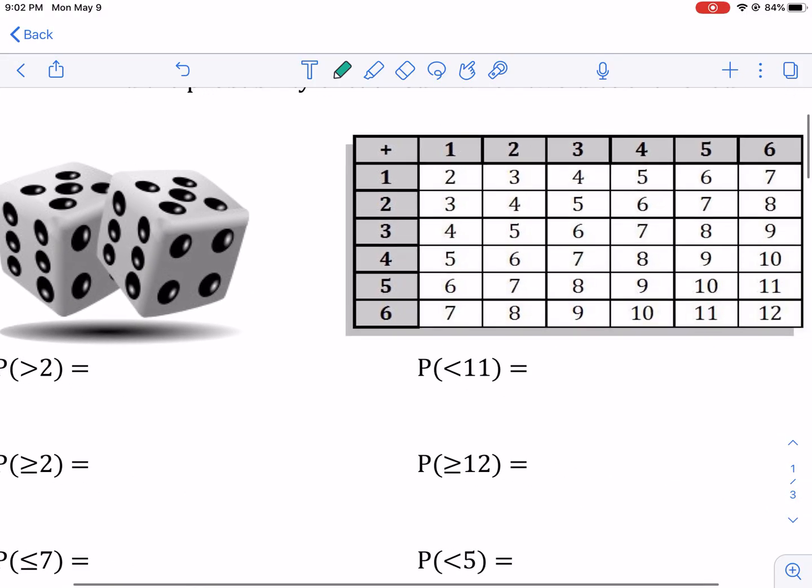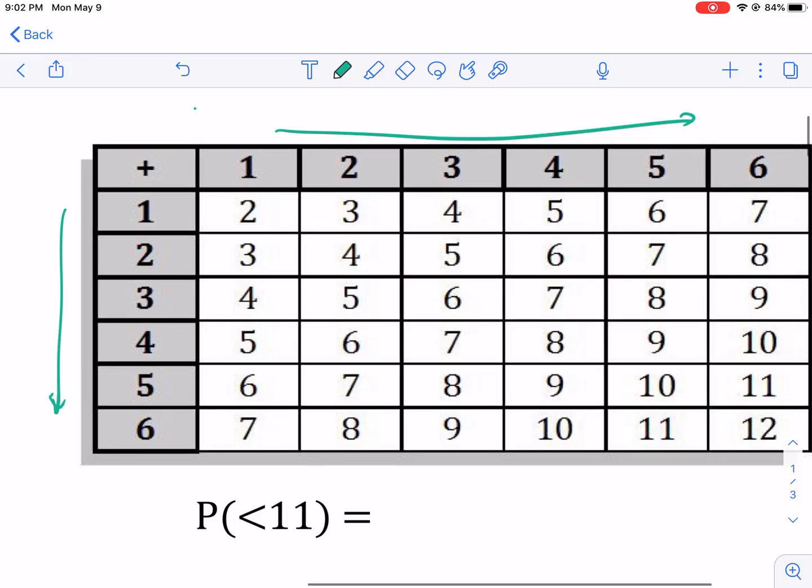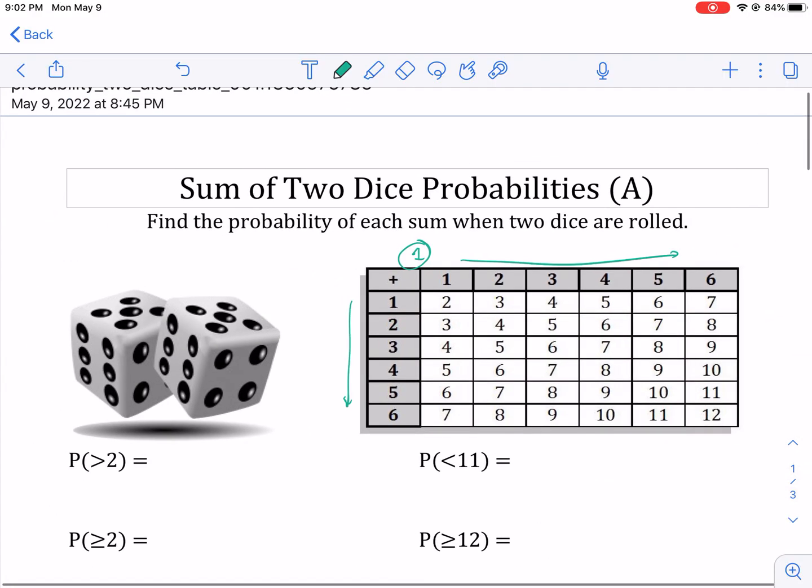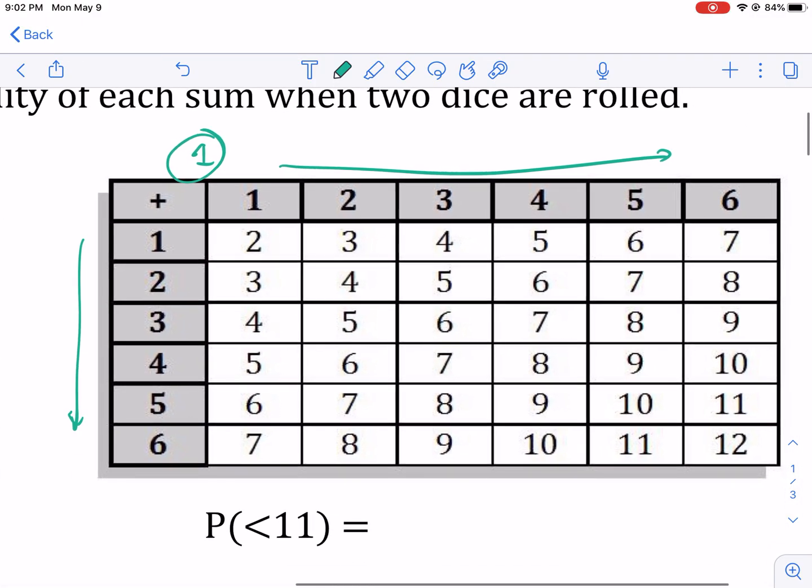So if we're looking here at our chart, we can see this is one through six. This is one through six. These are two dice. And these are all the possible combinations. You'll notice that in white, you're not going to see the number one because that's impossible to roll a one when you have two dice. And the minimum value on each dice is a number one. So the minimum value, of course, is two.